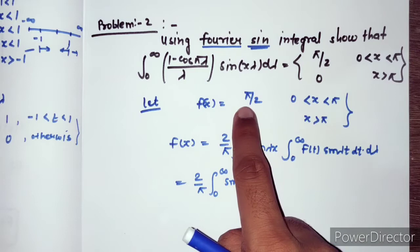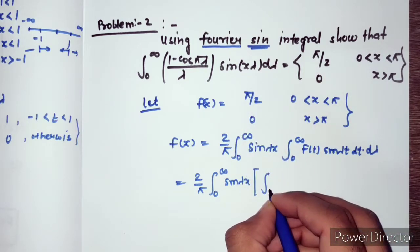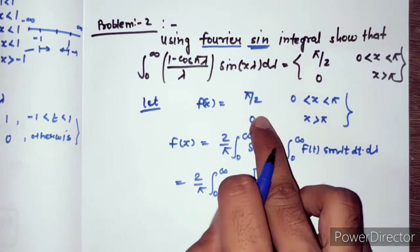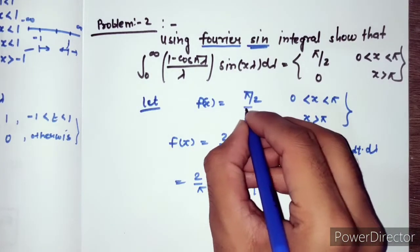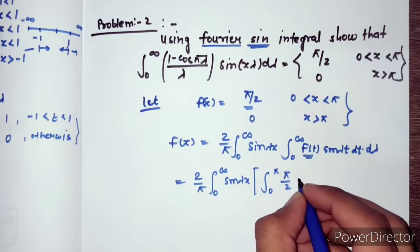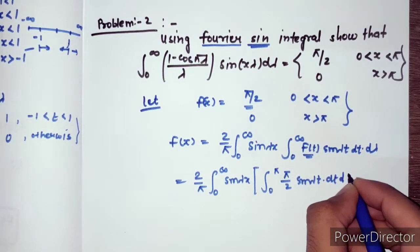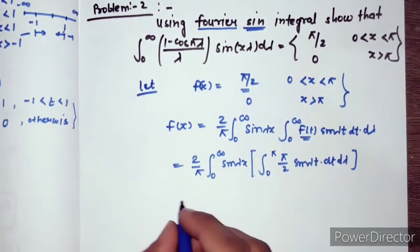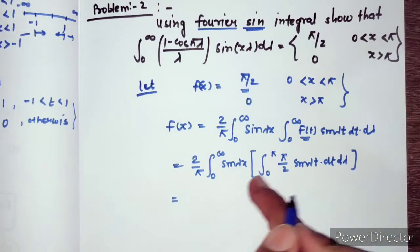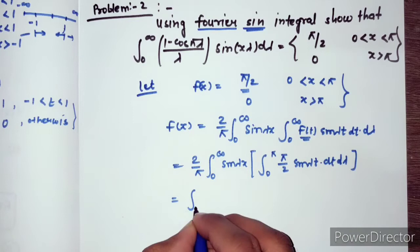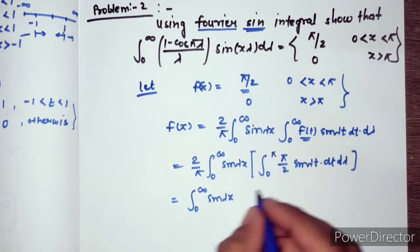So we have (2/π) times the integral from 0 to infinity of sin(λx), and applying the limit by the given condition — x from 0 to π — f(t) equals π/2. So we write π/2 times sin(λt) dt dλ. The π/2 is common and cancels out, leaving the integral from 0 to infinity of sin(λx).